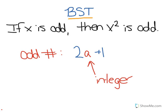So for example, 5, which is an odd number, equals 2 times 2, which is an integer, plus 1. That's our a.